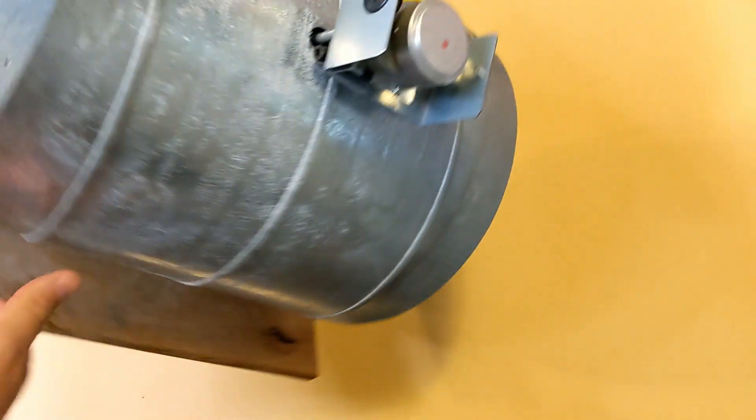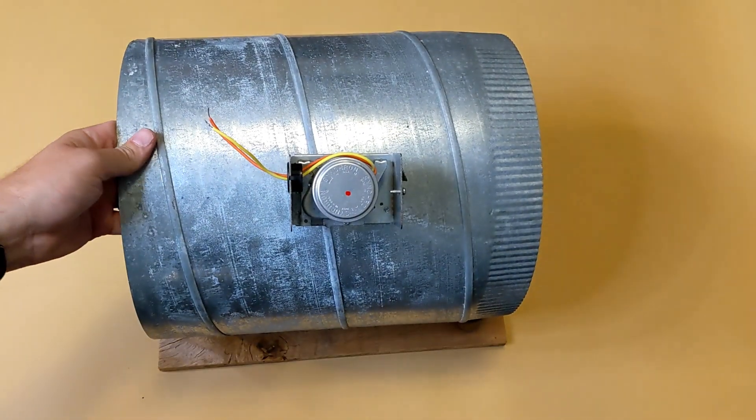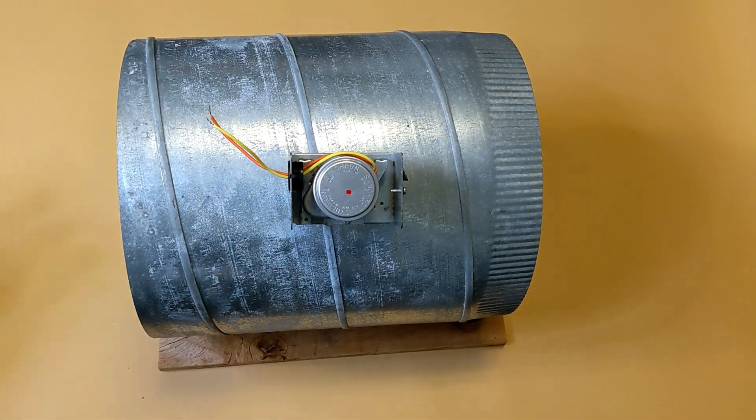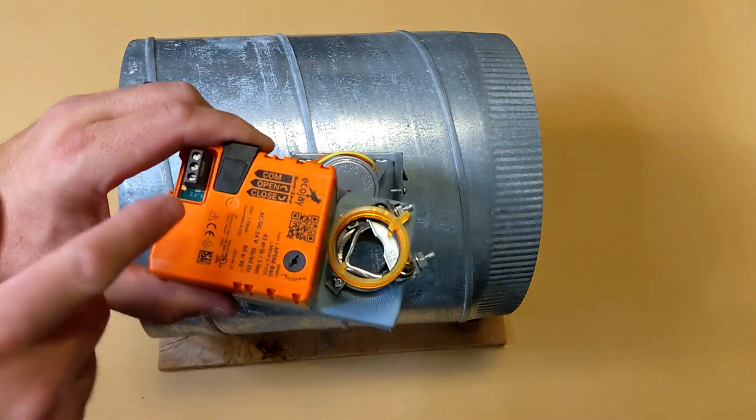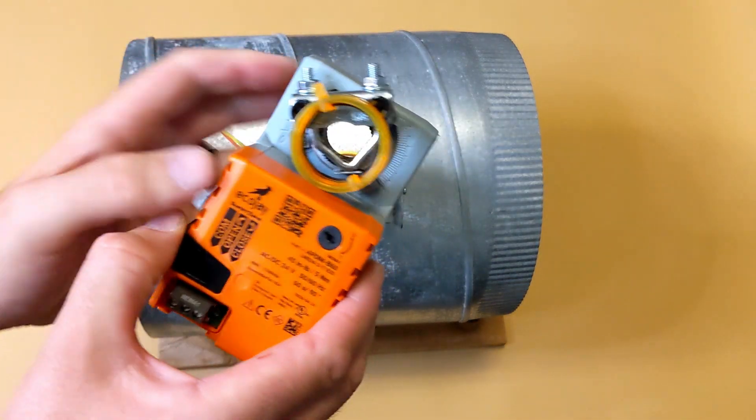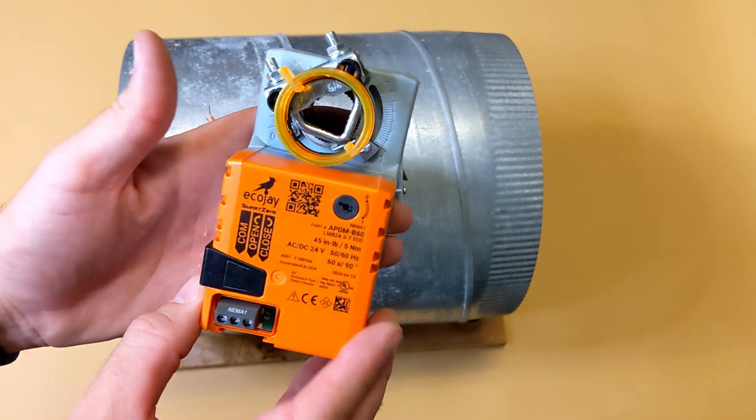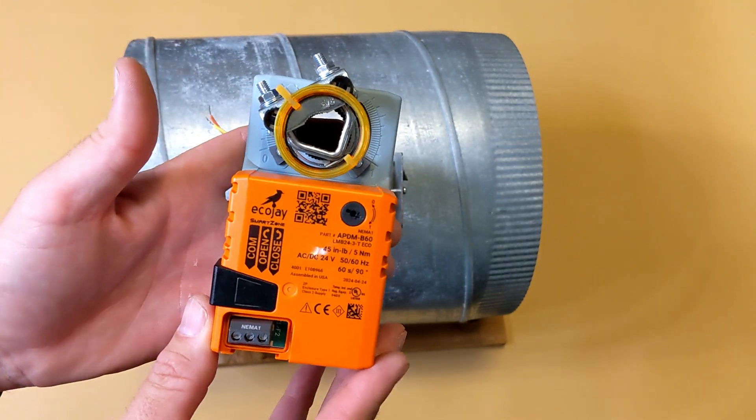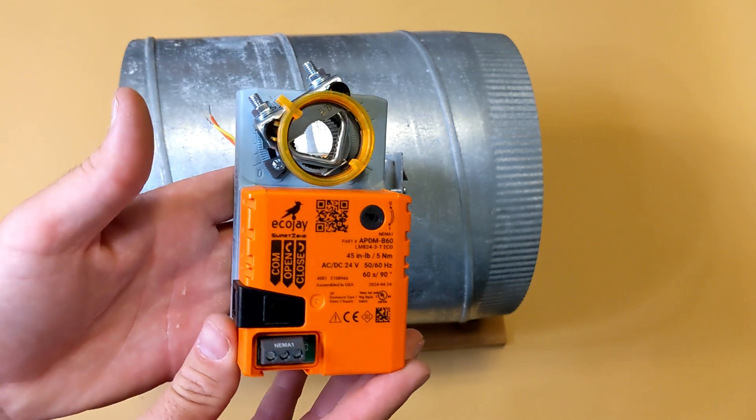This is the Honeywell ARD damper, and today we're going to be replacing the motor that's gone bad with an Eco-J SmartZone actuator that will last a lot longer and has higher torque rating and uses much less power.